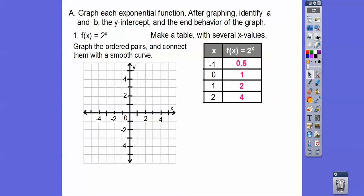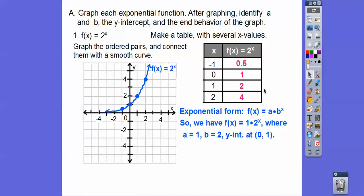Let's go ahead and graph the ordered pairs and connect them with a smooth curve. I'll go to the left 1 up a half. Over 0 up 1, then over 1 up 2, and over 2 up 4. So there's those points. Connect them with a smooth curve. So it did say talk about a and b and the end behavior. It's in the form of 1 times 2 to the x. So a is that 1, b is that 2, and the y-intercept is where it crosses the y-axis at y equals 1, or (0, 1).